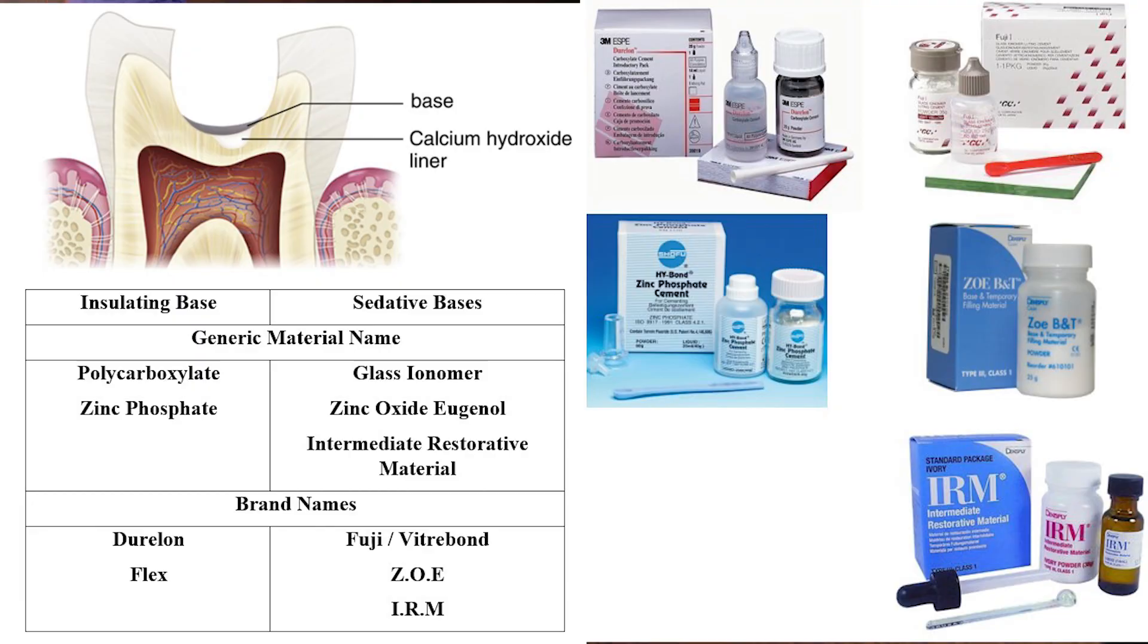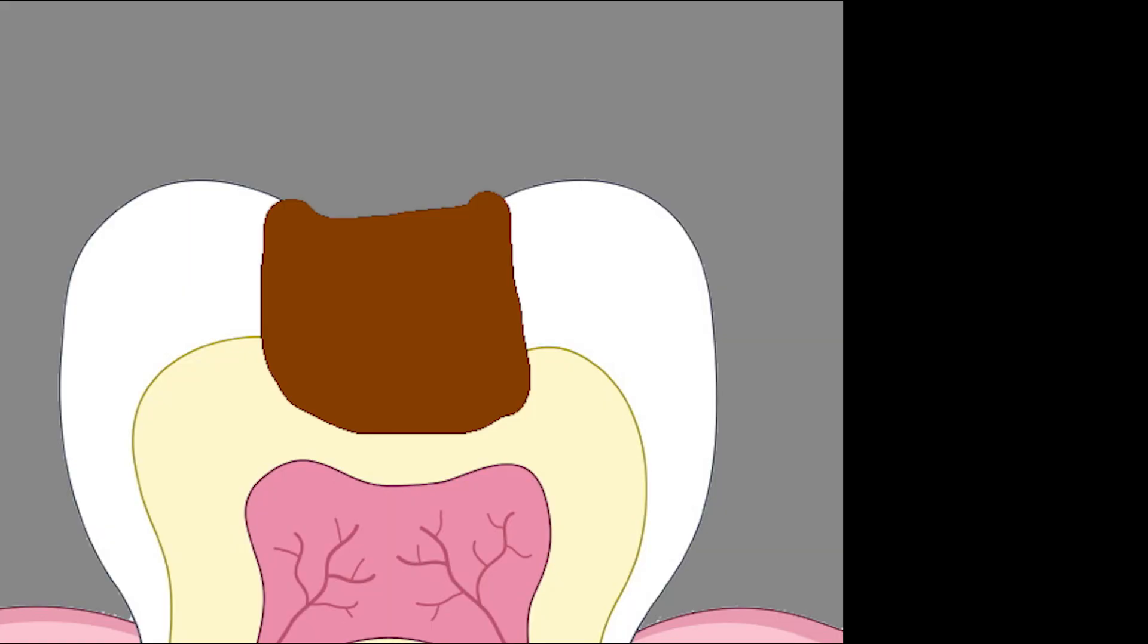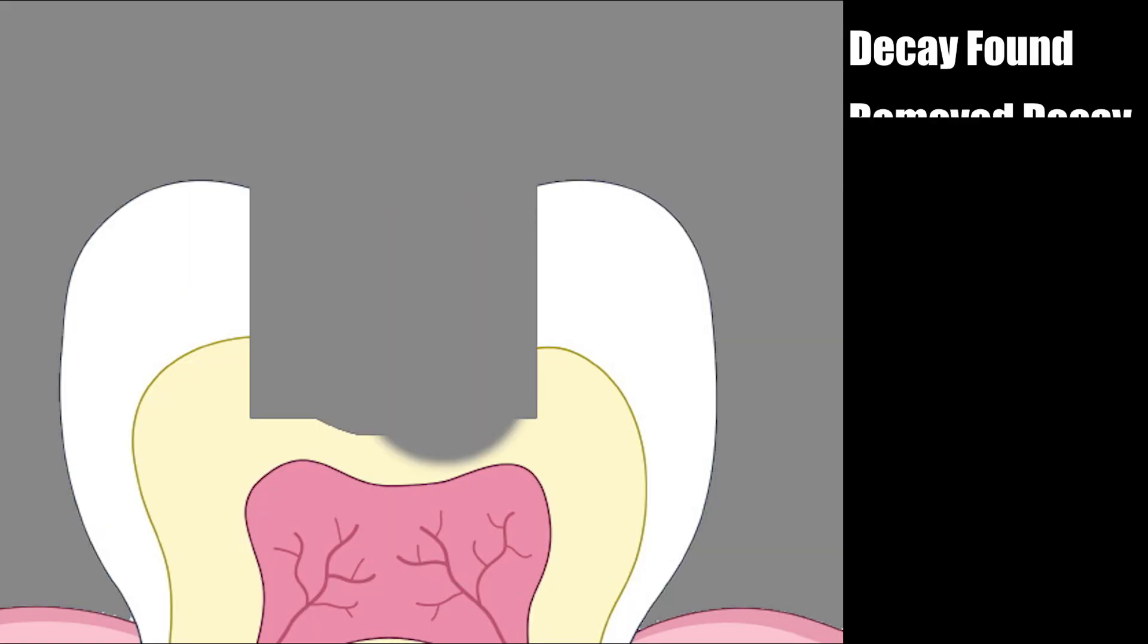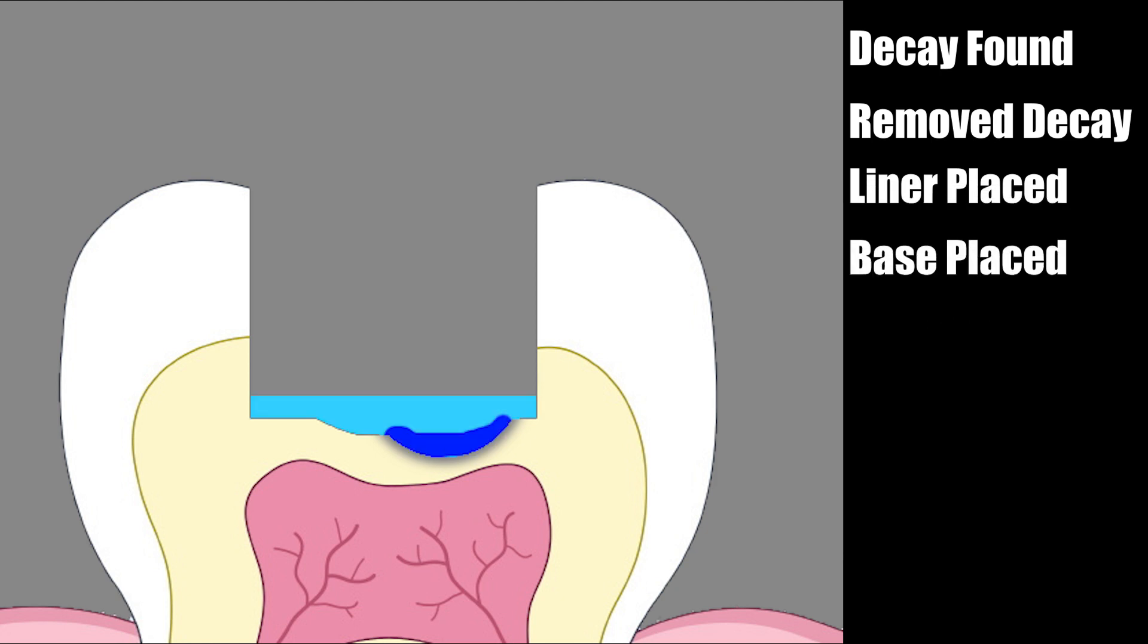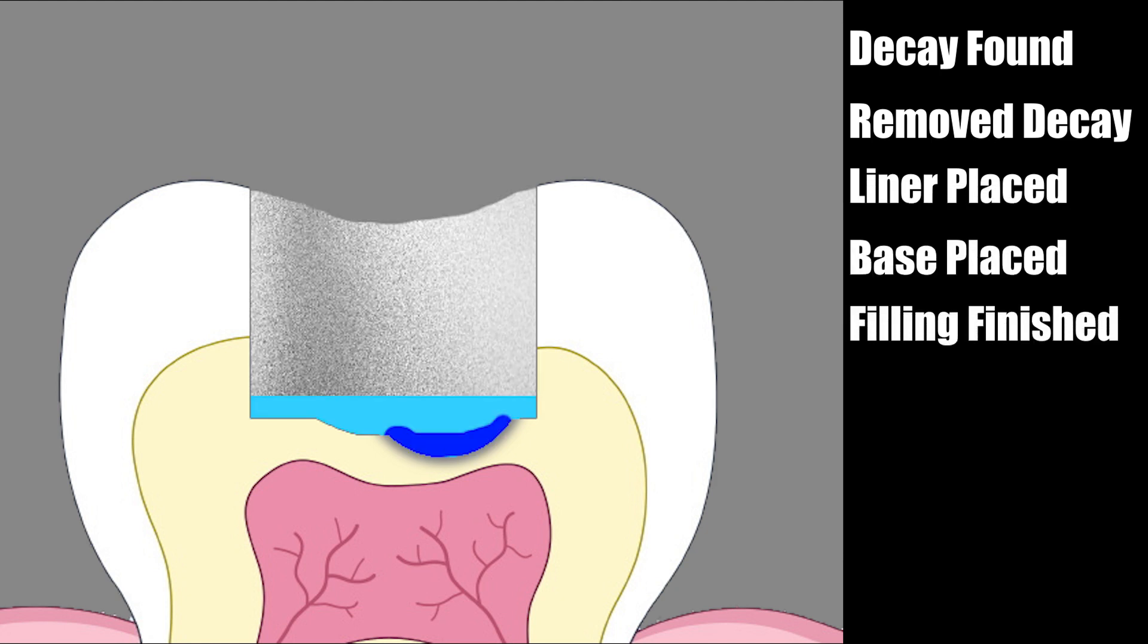The main purpose of the base is after decay is detected and removed with a handpiece, a liner is potentially placed, then a base right on top of that, and a permanent filling at the end. The base layer acts as either an insulating layer to combat thermal changes that could make your tooth very sensitive, and/or provides sedative relief with fluoride-releasing or eugenol-utilizing materials.